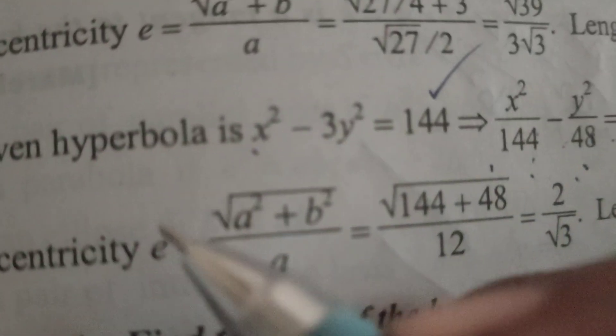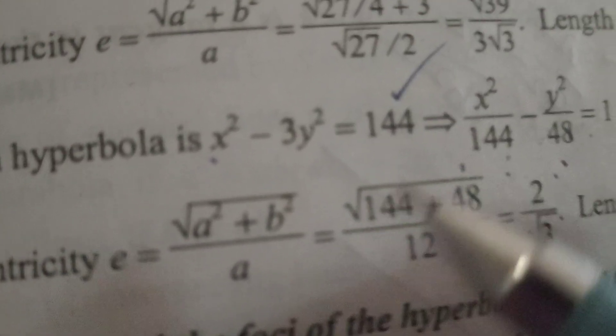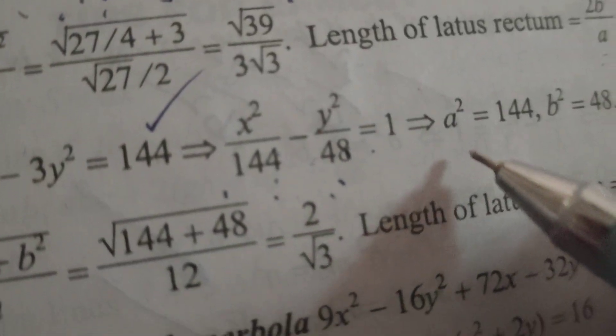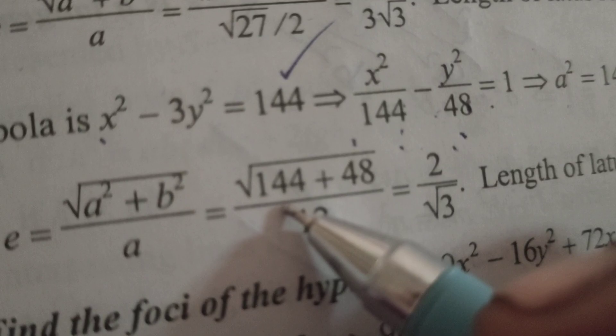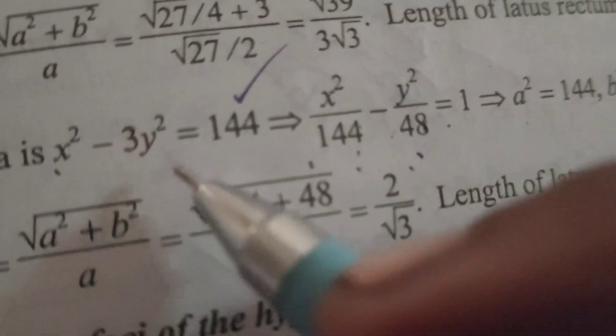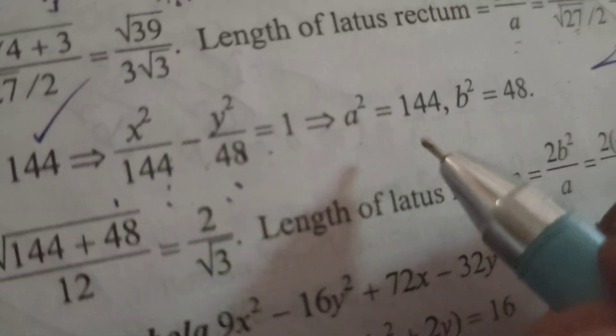Next, let's find the eccentricity. The formula is e = √(a² + b²)/a. Substituting the values: e = √(144 + 48)/√144.